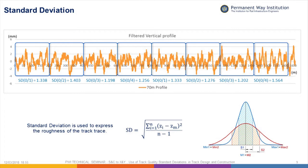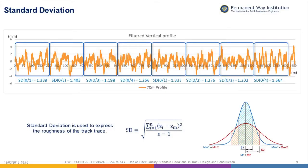The way we measure general roughness is to use a standard deviation. We chop our filtered profile into eighth-mile sections, and for each eighth-mile section we look at all the data points — the filtered height of the track — and use the standard deviation formula to calculate the SD. The SDs are listed for each eighth mile for the 70-metre filtered mean top. That's what the track recording car does to produce the 70-metre mean top SD that you see on your results.